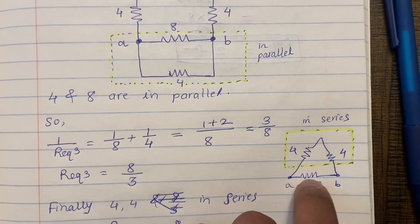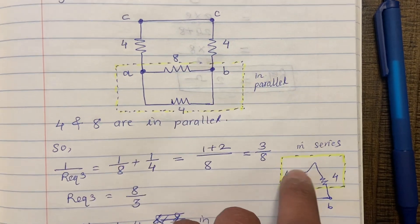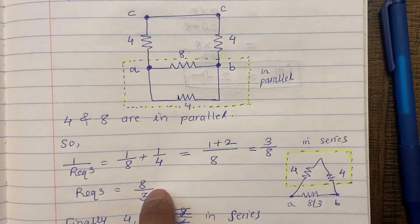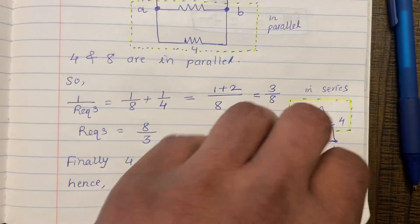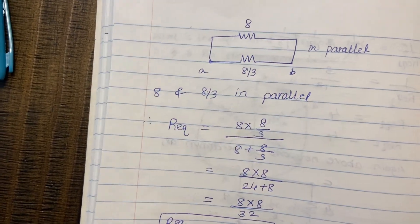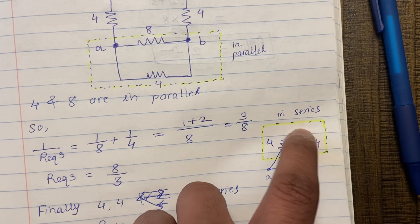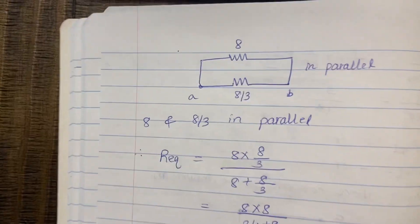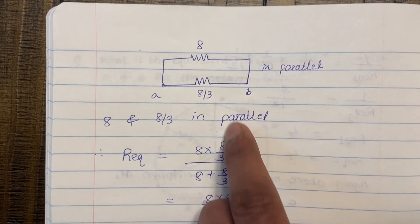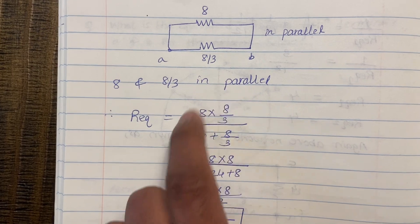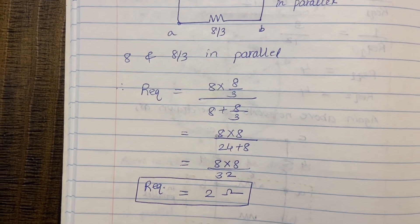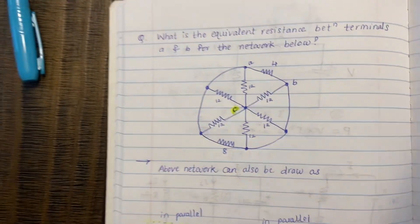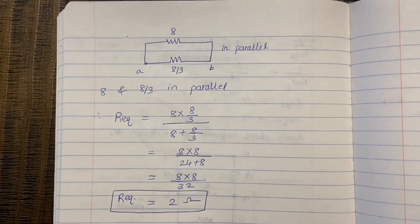Drawing the circuit again gives a triangular structure with 4Ω, 4Ω, 4Ω, and the 8/3Ω equivalent. The two 4Ω resistances in series give 8Ω. This 8Ω is then in parallel with 8/3Ω, so the equivalent resistance = (8 × 8/3) / (8 + 8/3) = 2Ω. So the equivalent resistance of this circular network is 2Ω.